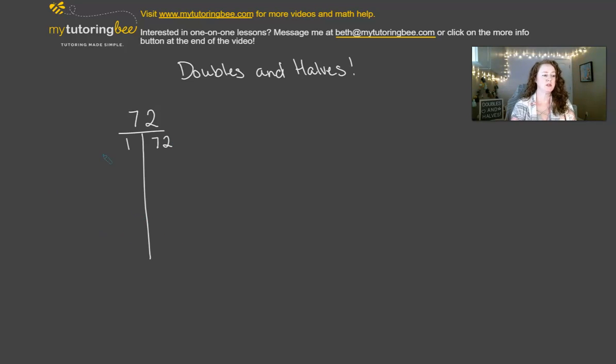So what we can do is double one number, so times 2, which gives us 2, and then we have the other number, or divide by 2, and then half of 72 is 36. So we can do it again. If we double 2, we can get 4, and if we have 36, then we can get 18, and 4 times 18 is 72.